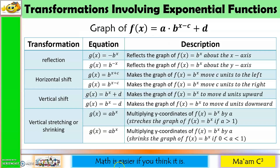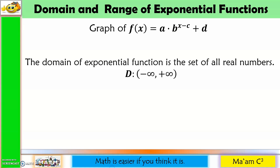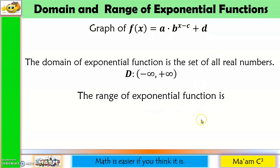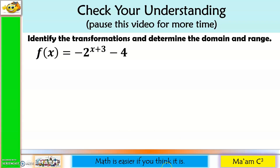Here is the summary of what we discussed — transformations involving exponential functions: reflection, horizontal shift, vertical shift, and vertical stretching or shrinking. For the domain and range of exponential functions: the domain is always the set of all real numbers, from negative infinity to positive infinity. The range depends on two things: your A and your D. If A is greater than 0, the range is from D to positive infinity. If A is less than 0, the range is from negative infinity up to D. Now let us check your understanding — pause this video for more time.